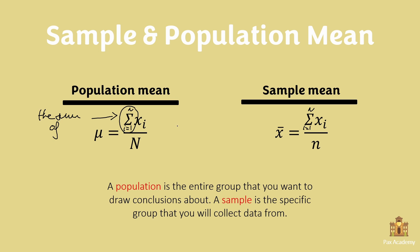Now, the question is: what's the difference between the population and the sample? And this we need to have very clear in our minds. A population is the entire group that you want to draw conclusions about. A sample, on the other hand, is the specific group that you will collect data from.